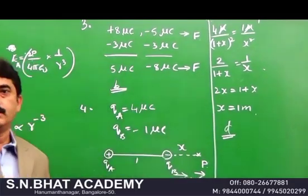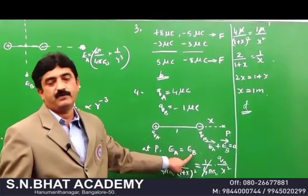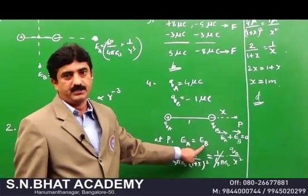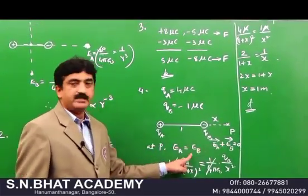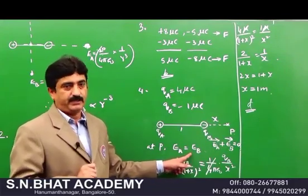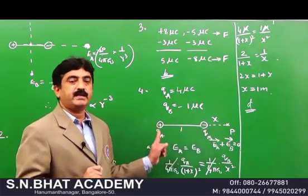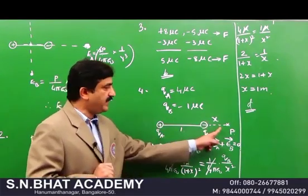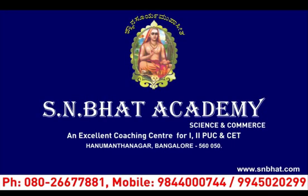To summarize: the condition for a null point is E_A + E_B = 0, meaning E_A = E_B in magnitude. For like charges, the null point lies between them; for unlike charges, it lies outside, closer to the charge of smaller magnitude.